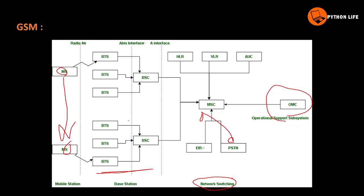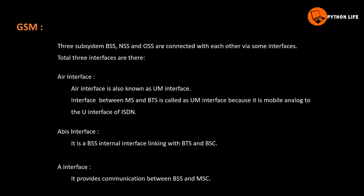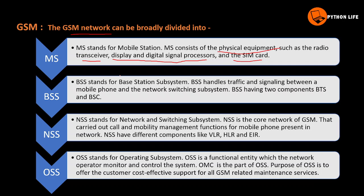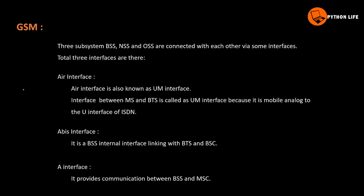In this network, in the MSC - mobile switching controller - you can use data. If you use another network, you can connect to that other network. In GSM, you can use radio air interfaces. The interface connects the four parts: MS, BSS, NSS, and OSS.